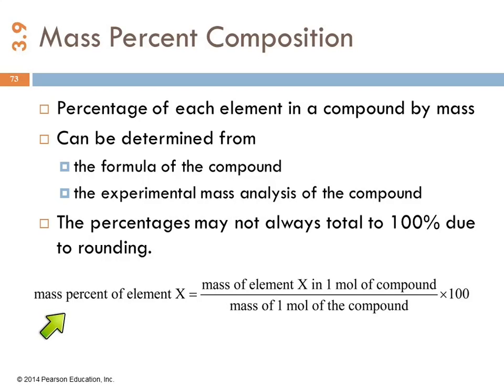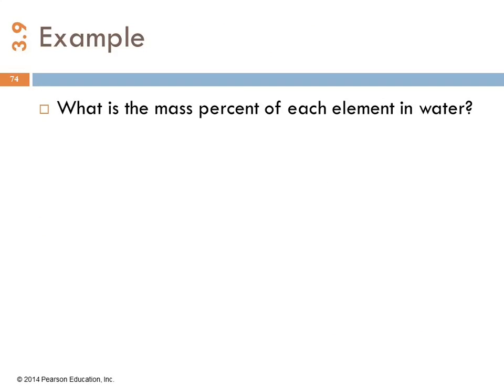If we look at the mass percent of element X in the compound, it'll be the mass of element X in one mole of the compound divided by the mass of the whole mole of the compound, not just the X that's in it. So X is the part, the whole compound is the whole, times 100. And here's an example.